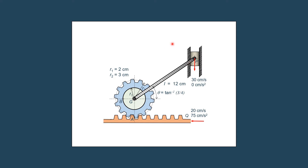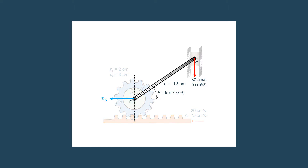We have seen several ways to calculate the velocity of point G. Now we are going to use the instantaneous center method. The velocity of point P is known — 30 cm per second directed downward. The direction of the velocity of point G can be predicted to be horizontally to the left. Focusing on link GP, we draw a line perpendicular to the velocity at P, and another line perpendicular to the velocity at G. These two perpendicular lines intersect at a point named I, the instantaneous center of rotation of the link GP.